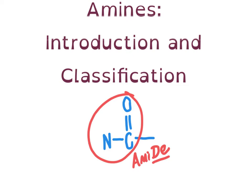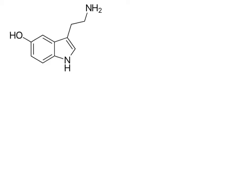Amines are a very broad group of compounds with a wide variety of interesting biological functions. For example, the compound in the upper left corner is serotonin, a common neurotransmitter. In fact, the majority of neurotransmitters in the body are molecules with one or more amine functional groups. Serotonin actually has two amine functional groups — we can circle them both — because in both cases the nitrogen atom is not directly connected to a carbonyl group.